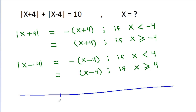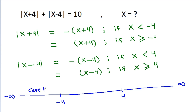On the number line we have -4 and 4, from -infinity to infinity. We can make 3 cases: case 1, case 2, and case 3.